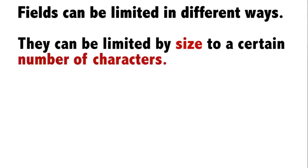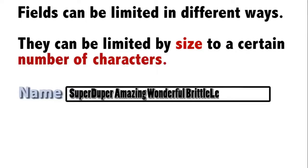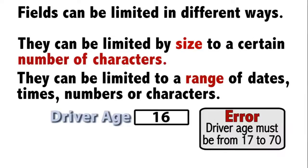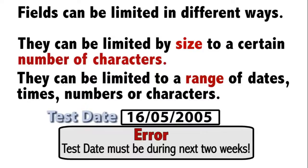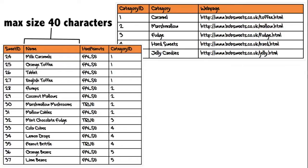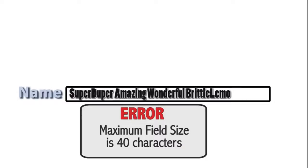The fields in Bob's database have a specific length or can store a specific range of numbers, dates, times or characters. The name field of his sweet table has a field length of 40 characters, so the field cannot store more than 40 characters. If Bob was to enter 41 characters he would receive an error message from his database management software and be told to try again.